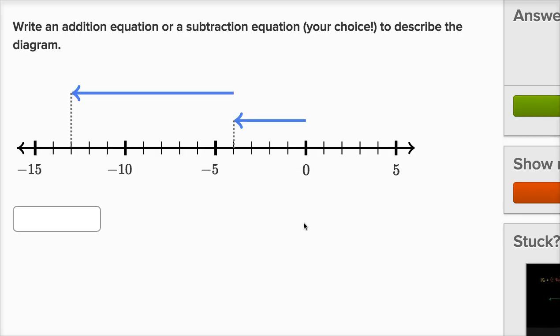Write an addition equation or subtraction equation, your choice, so they're giving us some choice, to describe the diagram. All right, let's see what's going on here. Okay, we're starting at zero and we're going one, two, three, four to the left.